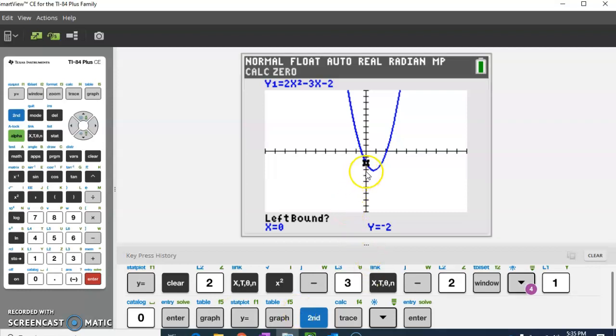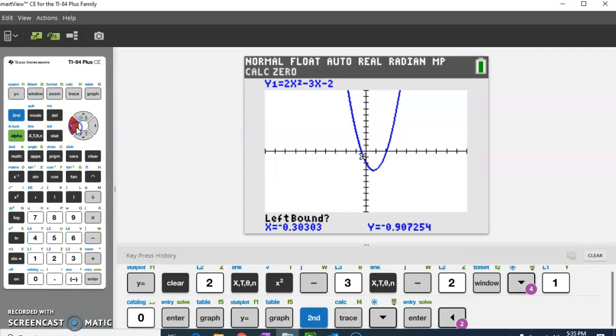When you see this, I always call it a spider. When you see this little flashing spider or star or whatever you want to think of it as, that's going to be the thing that I'm going to move along my quadratic. When you're looking for a zero, the first thing it says is left bound. I need to have the spider to the left of the zero. This is the zero that I'm looking for. If I'm to the left, I'm going to be above. So I'm going to use my arrow keys, left and right arrow keys only. As soon as I'm above and to the left, I can hit enter.